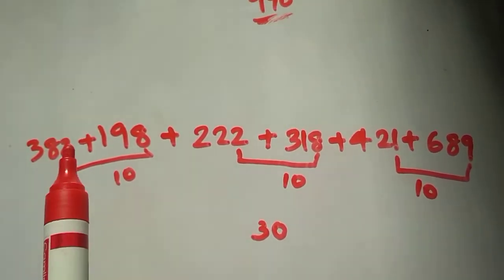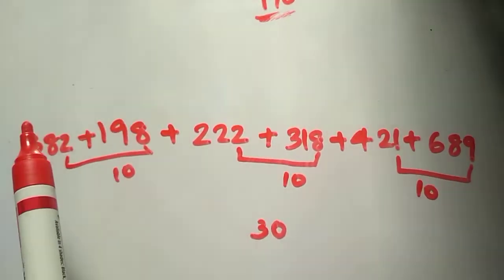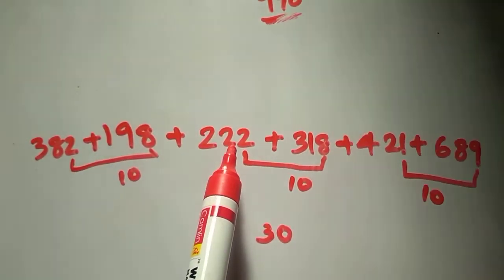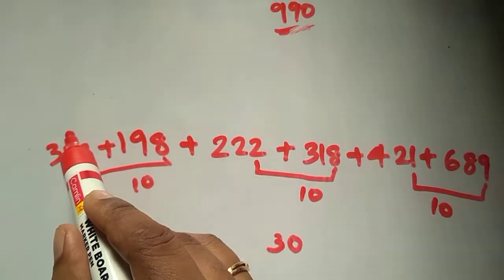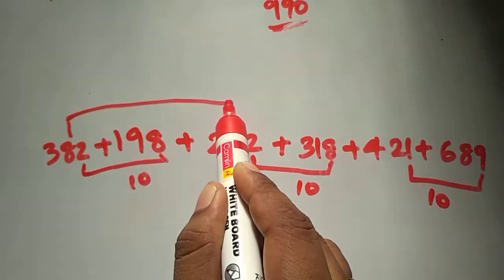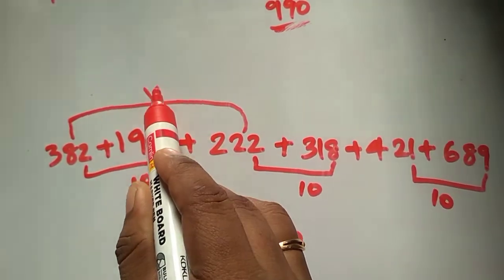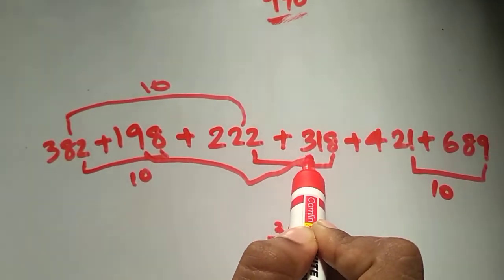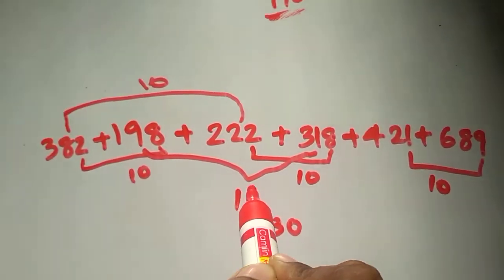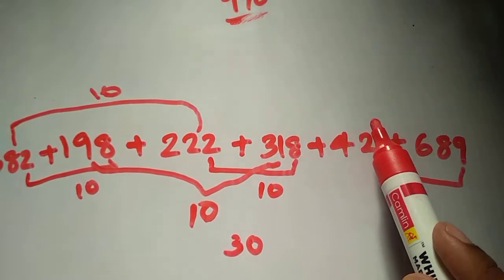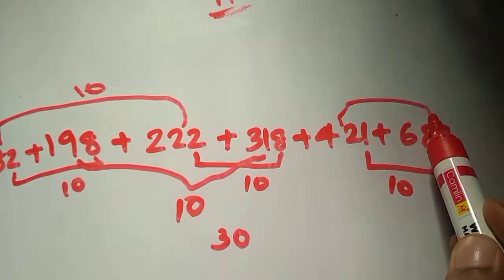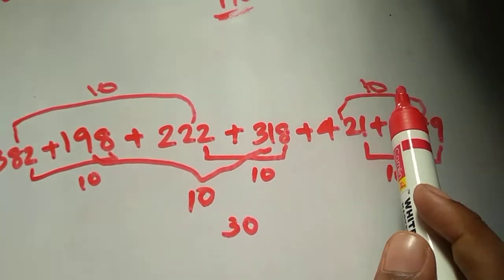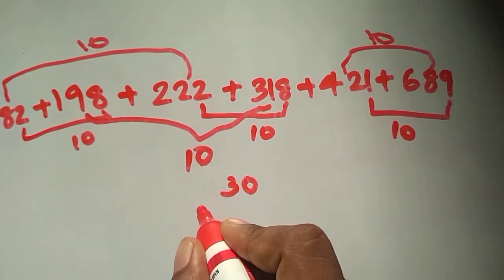Next we go to the 10's digits. 8 and 2 are complements — that's 10. Another 8 and 2 — that's 10. And 2 and 8 — that's 10. We also have a 9. So again we get three 10's plus the leftover 9, giving 39. But since these are 10's digits we add a zero, making it 390. Wait — we get 30 from the three complement pairs, written as 300 after the extra zero.